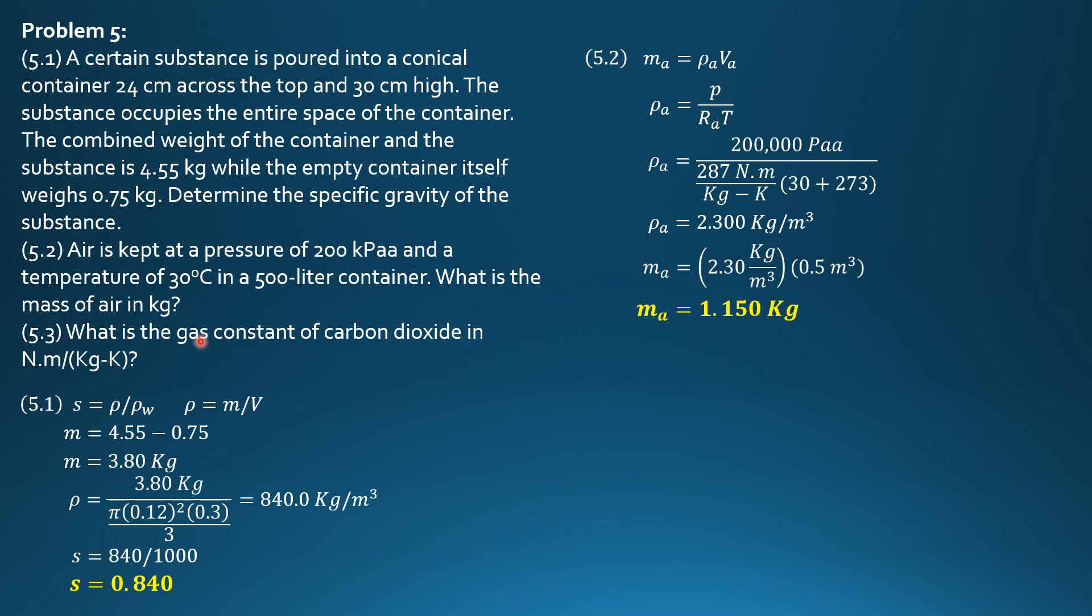Problem 5.3: What is the gas constant of carbon dioxide in Nm per kg kelvins? The universal gas constant is 8312 Nm per kelvins. So gas constant equals 8312 divided by molecular mass of carbon dioxide.